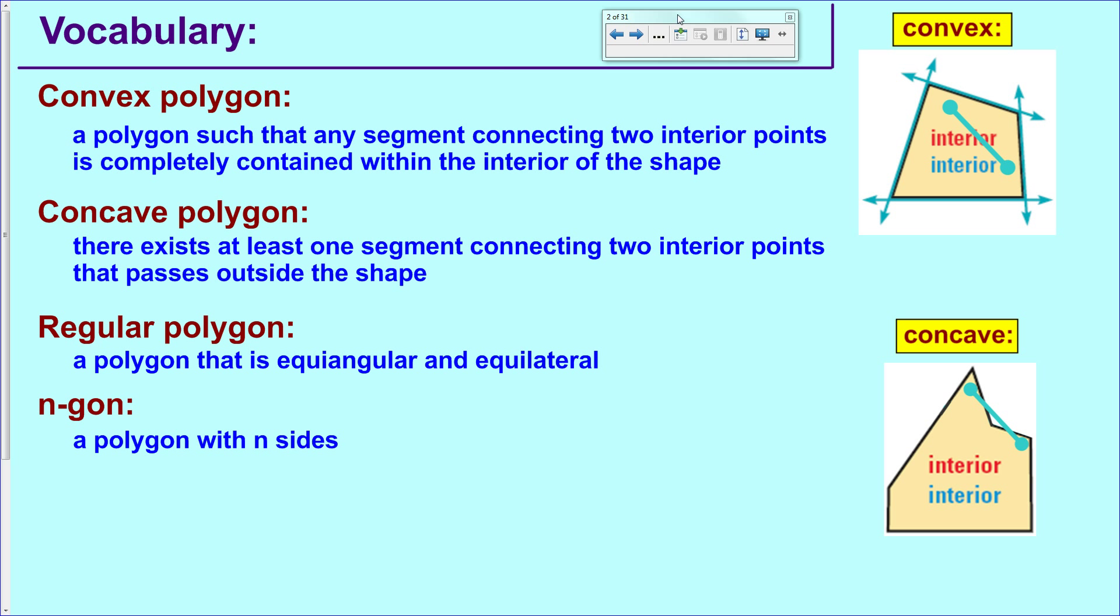A concave polygon, by contrast, if you choose, you should be able to draw at least one segment such that its endpoints are in the shape, but some portion of that segment falls outside the shape.